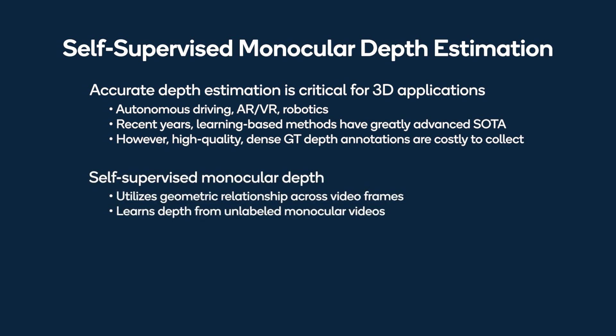Recently, self-supervision has emerged as a new paradigm for the task of estimating scene depth from a single image, or monocular depth estimation. By leveraging geometric information across video frames, it is now possible to train the network on unlabeled videos instead of collecting massive ground truth data.